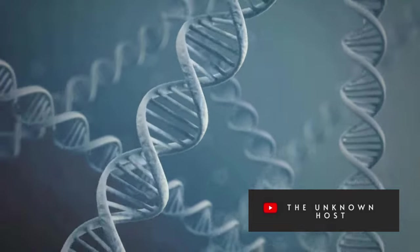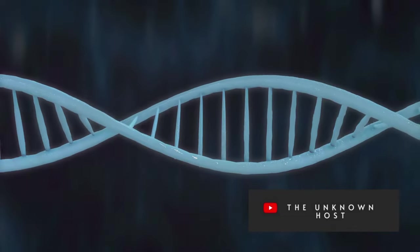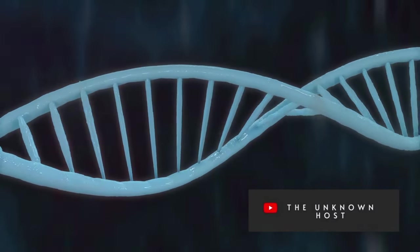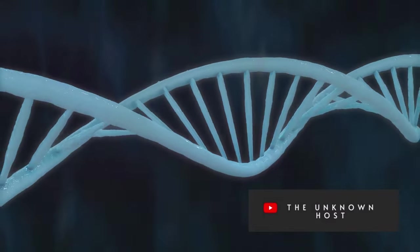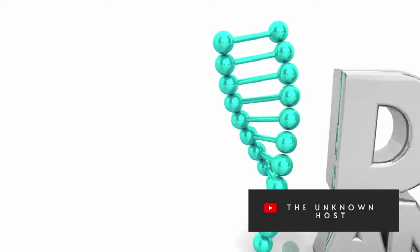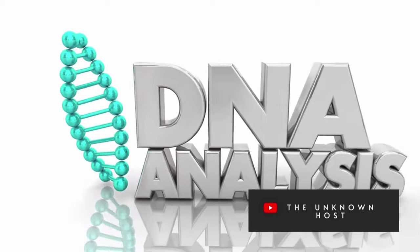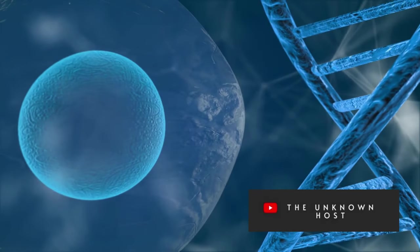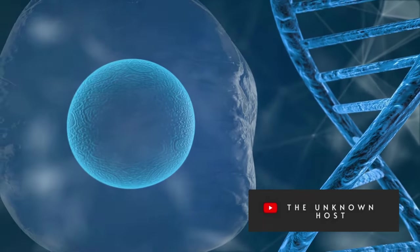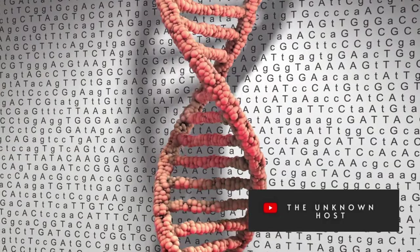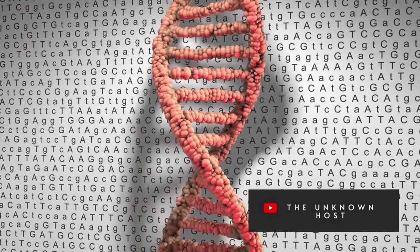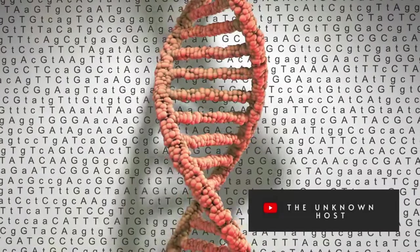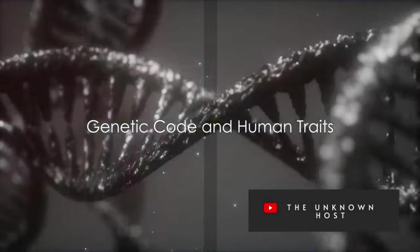But don't be fooled by its compact size. If you were to unravel the DNA in just one of your cells and stretch it out, it would measure about six feet long. The structure of DNA also allows it to store vast amounts of information. This information, written in a genetic code of A, T, C, and G, is what makes you you—from the color of your eyes to your ability to roll your tongue. It's all written in your DNA. The structure of DNA is not just beautiful, it's functional, allowing it to store vast amounts of information.